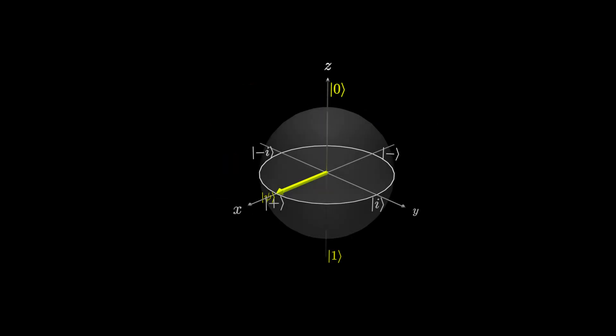We saw previously on the Bloch sphere that phase does not affect the probability of measuring a 0 or a 1, as the qubit stays the same distance from the |0⟩ state and the |1⟩ state, no matter how far we rotate around the Bloch sphere.